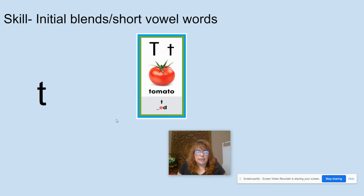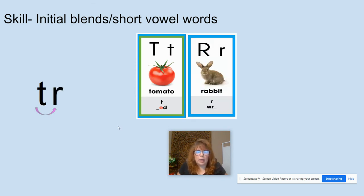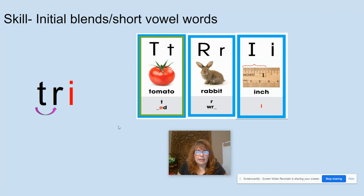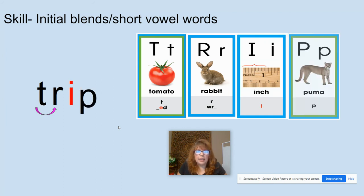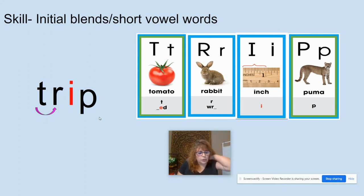T, like in tomato. R, like in rabbit. I, like in inch. P, like in puma. So we're going to do our blend: T-R, TR, I-P — trip. What word? Trip. Again, trip.